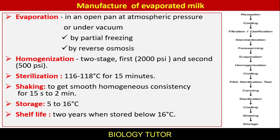Manufacture of evaporated milk: Evaporation is performed in an open pan at atmospheric pressure, or under vacuum, by partial freezing, or by reverse osmosis. Homogenization is a two-stage process — first at 2000 psi and second at 500 psi. Sterilization is at 116 to 118 degrees Celsius for 15 minutes. Shaking for 15 seconds to 2 minutes ensures smooth homogeneous consistency. Storage is at 5 to 16 degrees Celsius, giving a shelf life of two years.